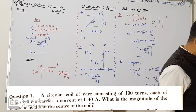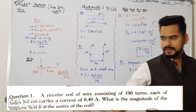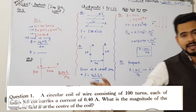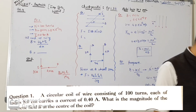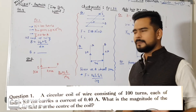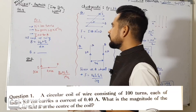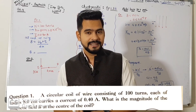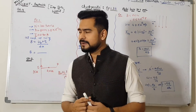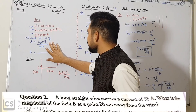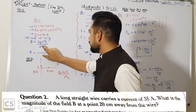This is the very first question of your exercise Chapter 4. You can see on your screen: circular coil of wire consisting of 100 turns, each of radius - you can see on screen. The formula you need to remember for magnetic field due to a ring is: B = μ₀nI / 2r. Mu naught ki value is 4π × 10⁻⁷.